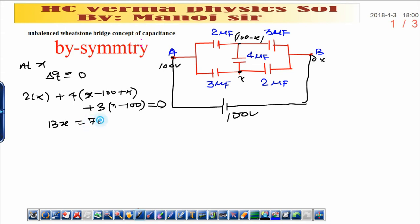400 plus 300, that is 700. And finally x will be 700 upon 13. 700 upon 13, this is the value of x.